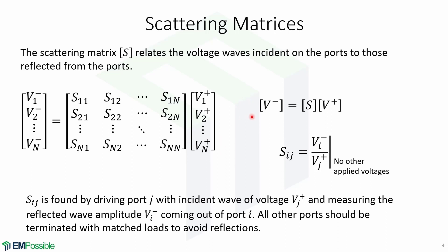We can write this in compact form as follows. To obtain the elements of the S matrix, we have this expression, where Sij equals Vi- over Vj+, when no other voltages are applied. In other words, Sij is found by driving port J with an incident wave of voltage V+, and measuring the reflected wave amplitude Vi- coming out of port I. All other ports should be terminated with matched loads to avoid reflections.